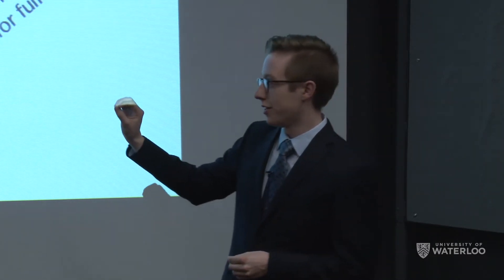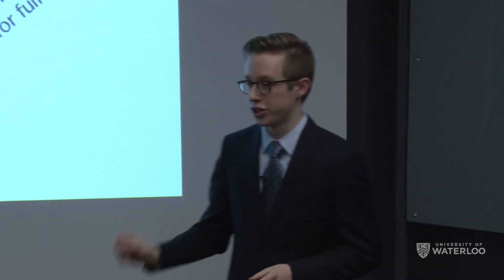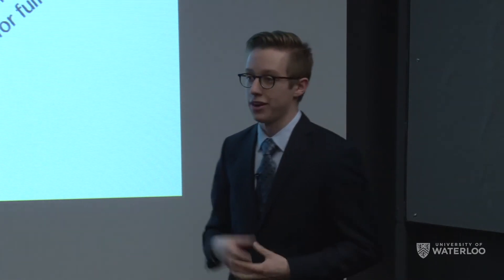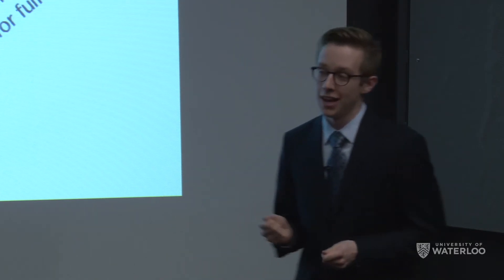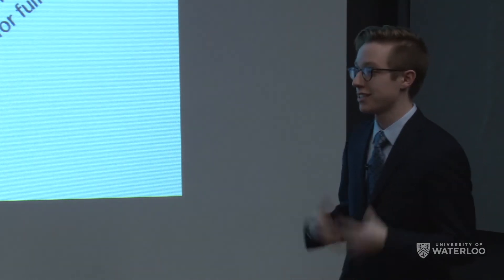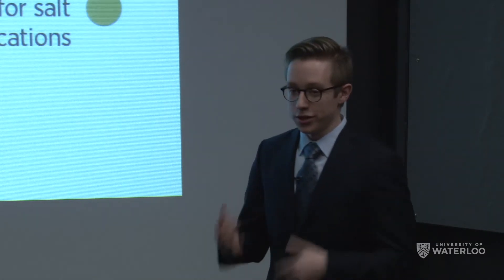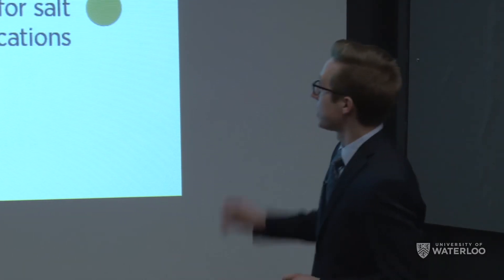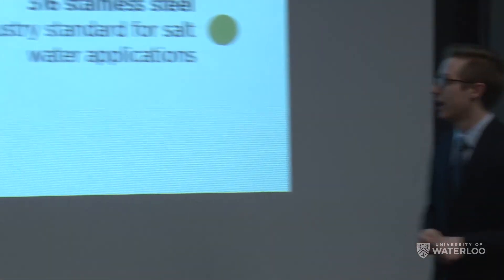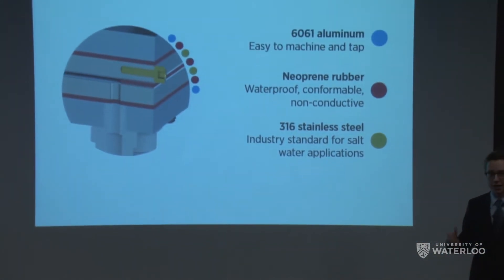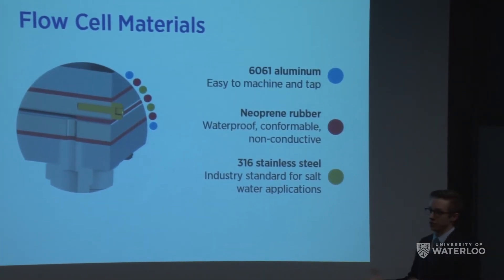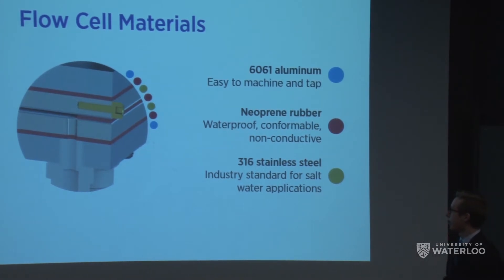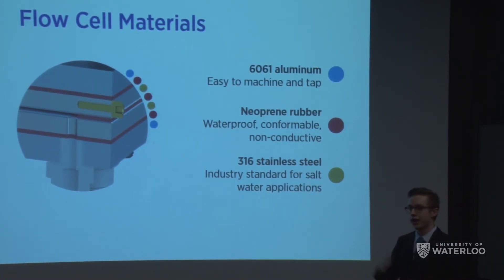Important to mention are the internal dimensions. The center channel depth is only 1.5 millimeters, because the rate-limiting step is removing ions from the solution — the smaller the separation distance, the faster that can happen. For materials, we used 6061 aluminum, a standard selection that's easy to machine, for our outside clamping plates and manifold. Neoprene rubber was used as insulation between those layers, keeping water in its respective places while being non-conductive and insulating the clamping layers from the current collectors. The current collectors use 316 stainless steel as an industry standard for saltwater applications.